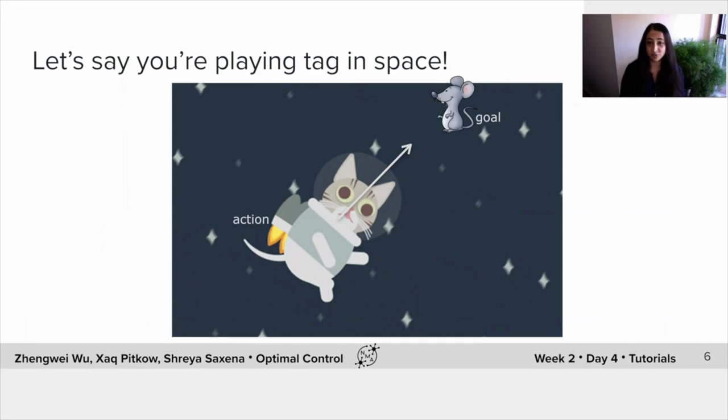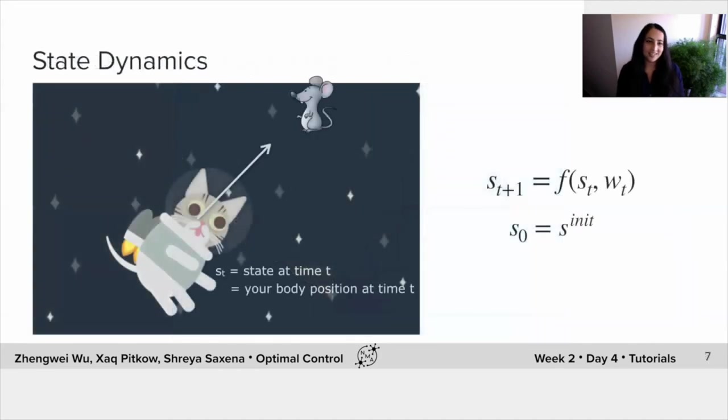You can get to the goal. The jetpack creates an action. So that is your control input, in fact. And the state that you're trying to control is your body position. So the state, in fact, is the body position of the cat. And of course, you want the state to be equal to the goal. That's what you want.